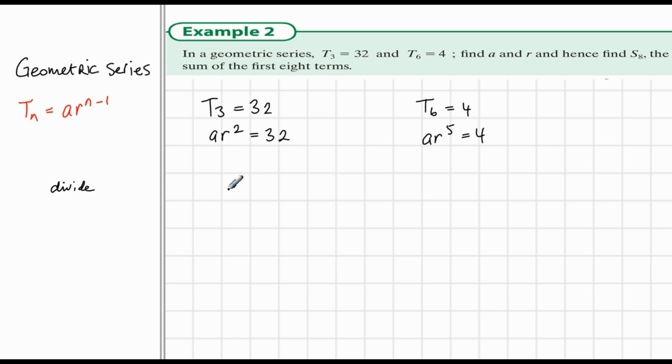If we divide them, the one with the higher power of r is ar to the power of 5 is equal to 4, and divide this by ar squared. So if we write this out, we have 4 divided by 32. And since this is true, we see that r cubed is equal to 1 over 8.